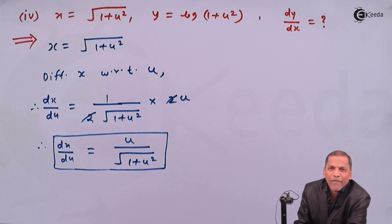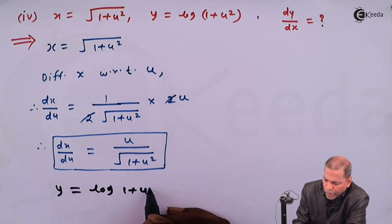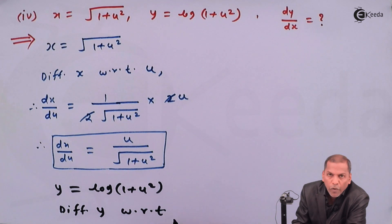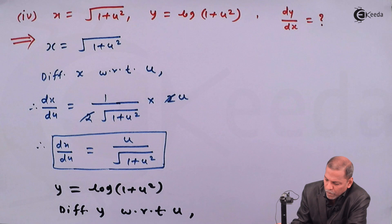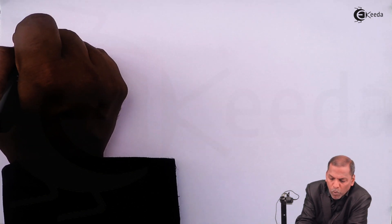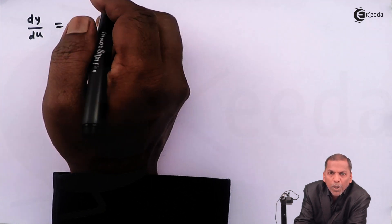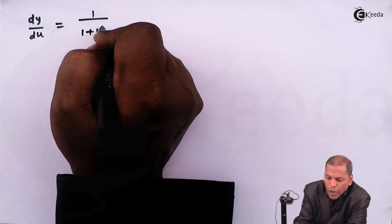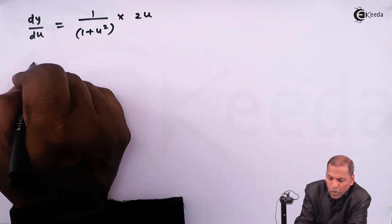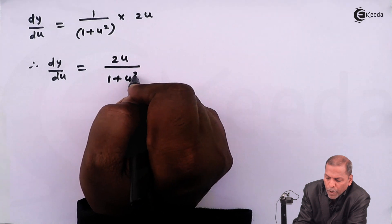Now we consider the second function, that is y. So y is equal to log in bracket 1 plus u squared. Differentiating y with respect to u, we get dy upon du. The derivative of log x is 1 upon x, so the derivative of log of 1 plus u squared is 1 upon 1 plus u squared, into the derivative of 1 plus u squared, that is 2u. So finally, dy upon du is equal to 2u upon 1 plus u squared.